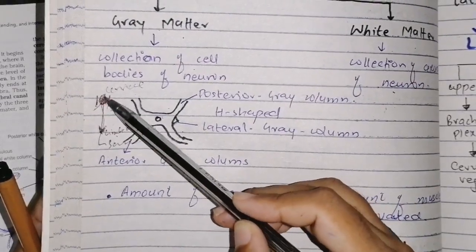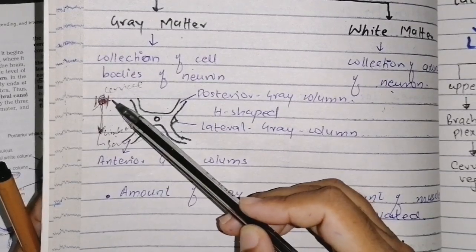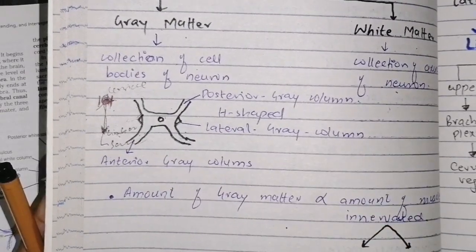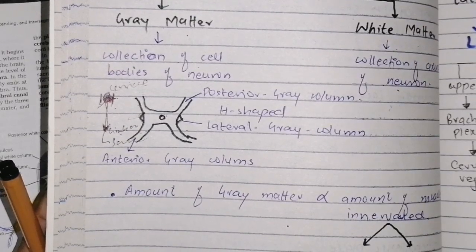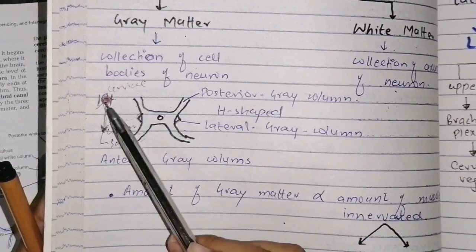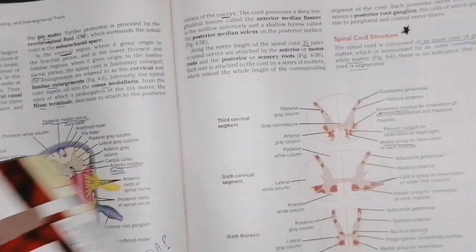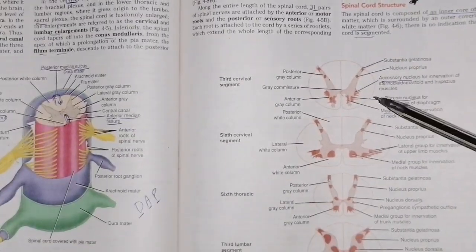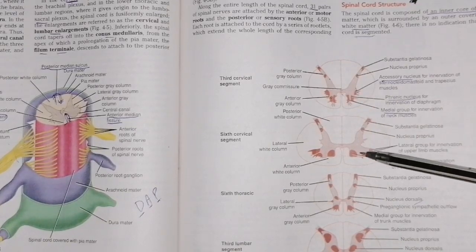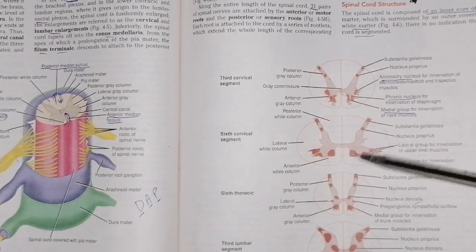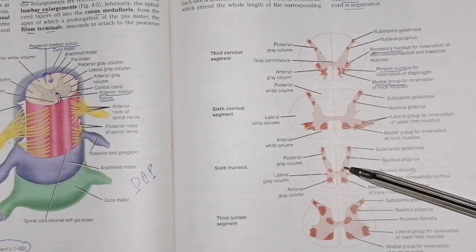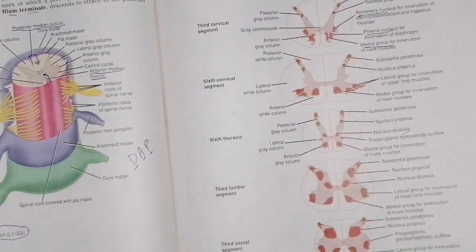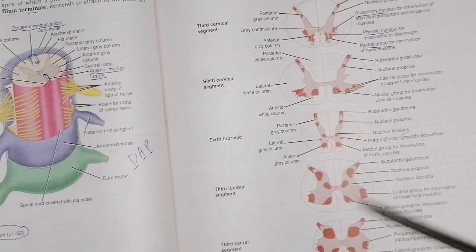For example, the lower cervical region gives rise to the brachial plexus, which innervates the muscles of the upper limb. So in this region, gray matter concentration will be more. In contrast, the upper cervical segment has less gray matter. Similarly, in the lumbosacral region, the lumbosacral plexus supplies the lower limb, so gray matter is again more concentrated.